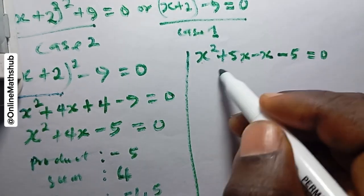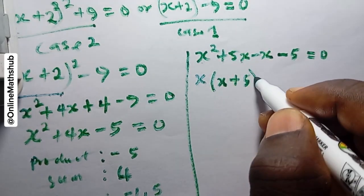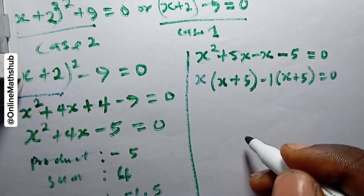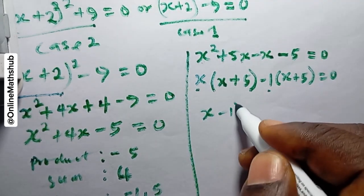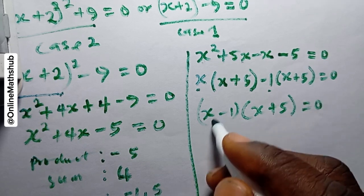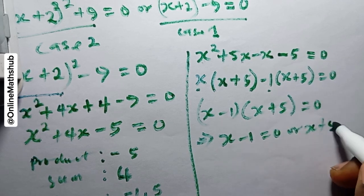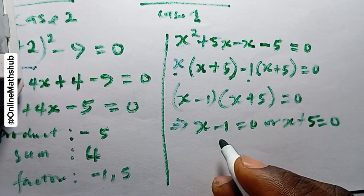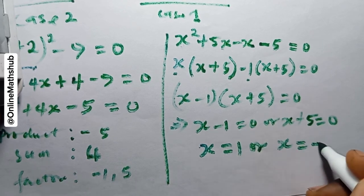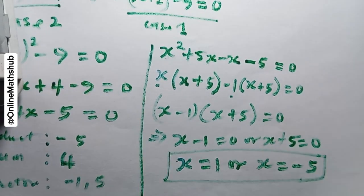Factoring by grouping: x(x + 5) - 1(x + 5) = 0, giving (x - 1)(x + 5) = 0. By the zero product property, x - 1 = 0 or x + 5 = 0, so x = 1 or x = -5. These are the first two roots of the equation.